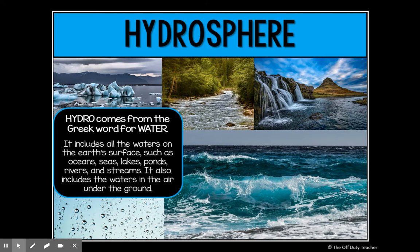First we're going to learn about the hydrosphere. Hydro is a Greek word that means water — whenever you see this root word, you know it has something to do with water. Hydropower is power generated by moving water, and to hydrate means to consume water. The hydrosphere includes all of the water on Earth's surface, including oceans, seas, lakes, ponds, rivers, and streams. Those are all different kinds of bodies of water, and the water in local creeks is part of the hydrosphere.